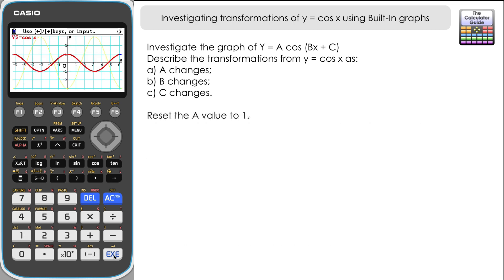Let's have a look at how the graph changes when we alter b. So let's just select b and we'll use the increase and decrease right and left on the direction pad. Let's increase b to 2. This is the graph of y equals cosine 2x.